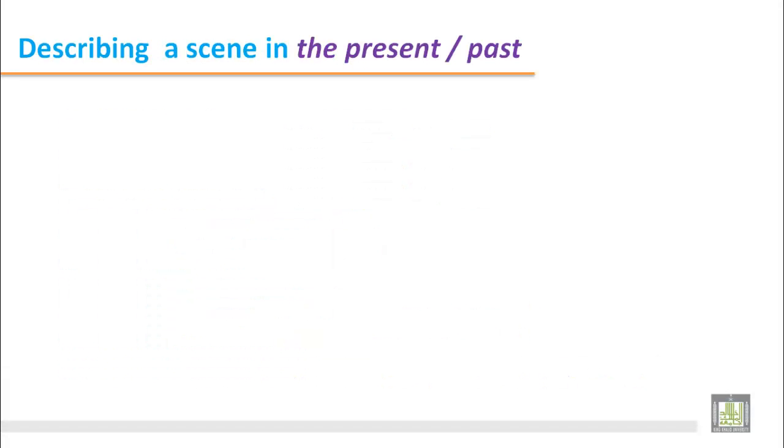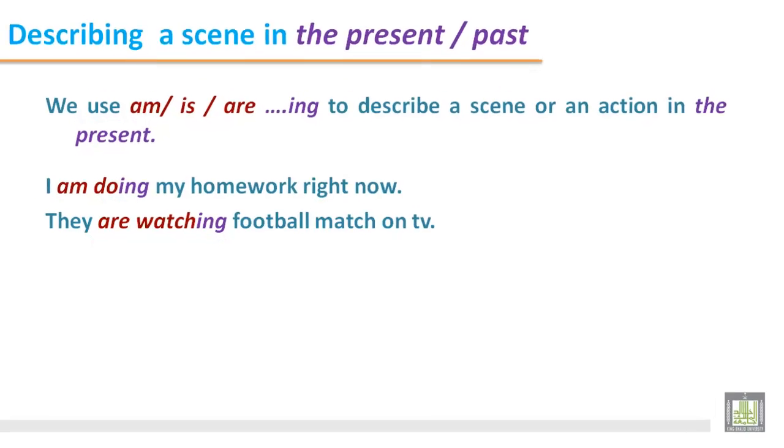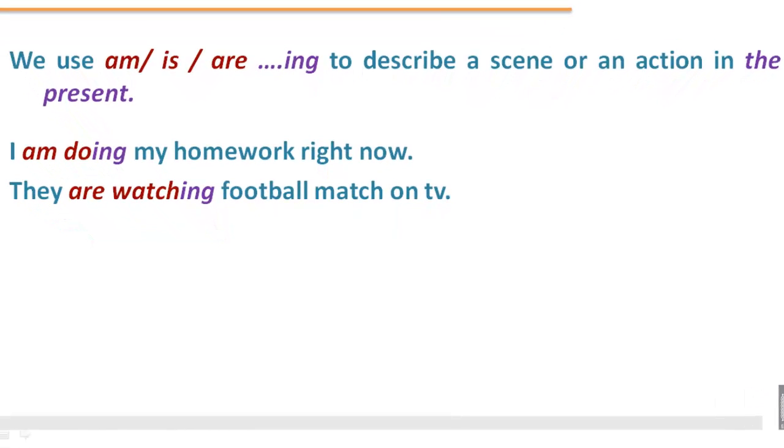Describing a scene in the present or past. We use am, is, are and the verb -ing to describe a scene or an action in the present. For example: I am doing my homework right now. I am and the verb do is with -ing. It describes an action in the present. They are watching football match on TV. This sentence shows that they are busy watching TV.